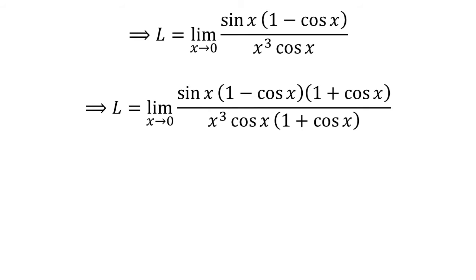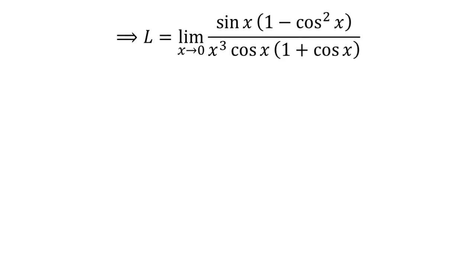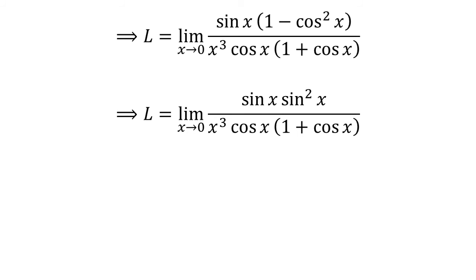Multiplying the numerator and denominator by a common factor does not change the value of the fraction, so let us multiply the numerator and denominator by the common factor 1 plus cosine of x. Since 1 minus cosine of x times 1 plus cosine of x equals 1 squared minus cosine squared of x, L equals the limit of sine of x times 1 minus cosine squared of x upon cube of x times cosine of x times 1 plus cosine of x as x approaches zero.